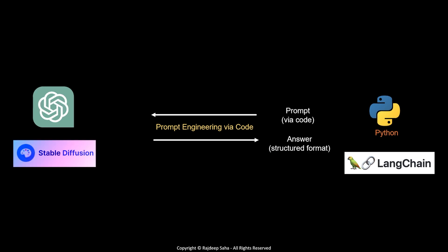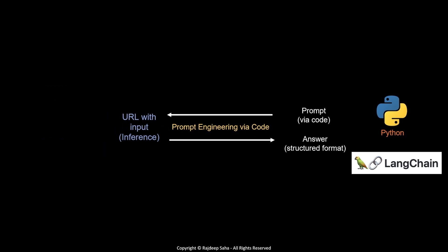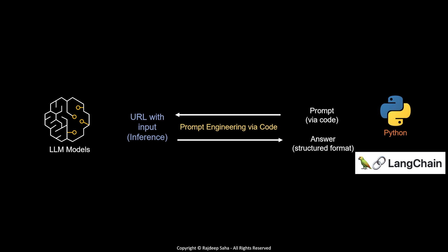How do you call these models? All these models expose a URL and you need to call it just like you call an API, passing your questions and other parameters in the input — we call this inference. At this point, you realize there need to be multiple LLM models, not just ChatGPT. At the end of the day, ChatGPT is a closed model — it's not open-sourced, so you cannot really fine-tune it and change it based on your business needs.